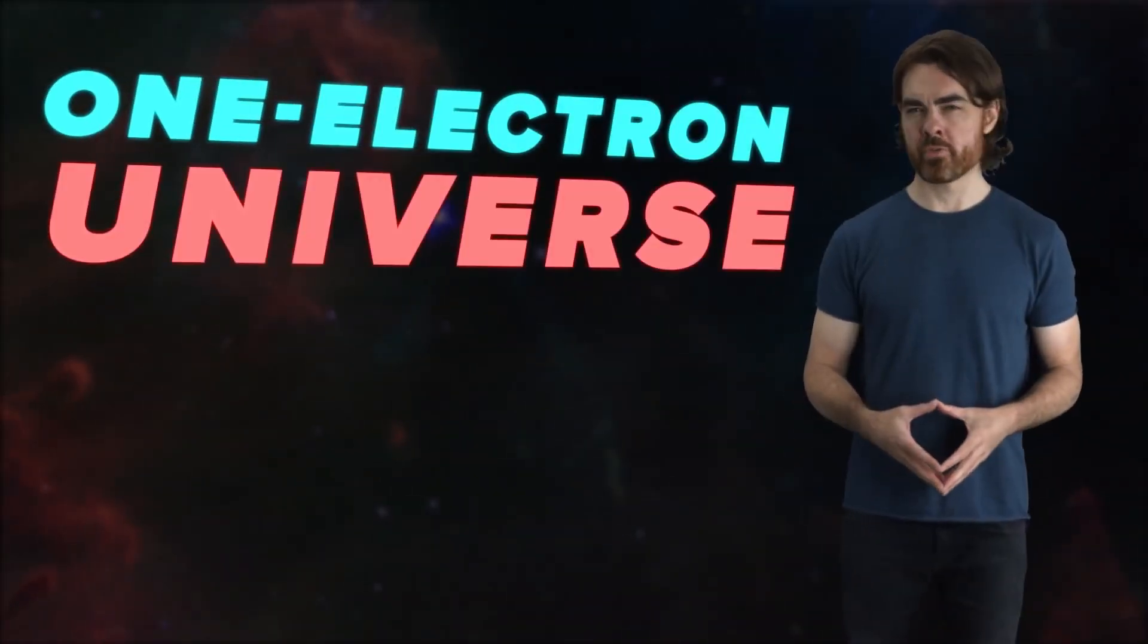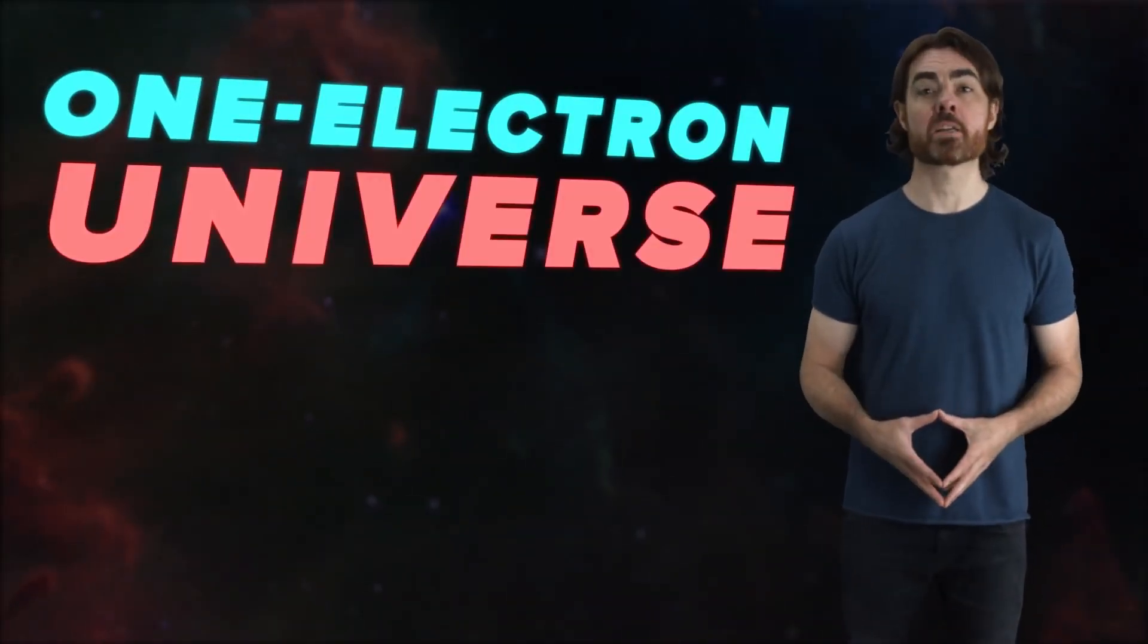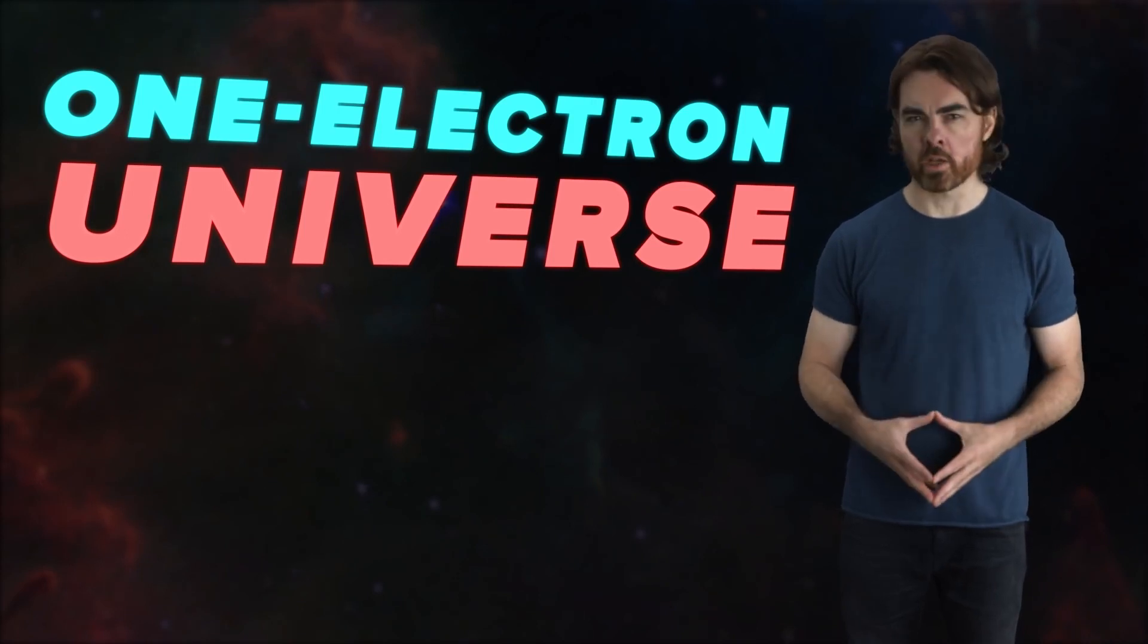The one electron universe was motivated by an odd fact about electrons that had troubled Wheeler, that they are all identical. Exactly the same charge, exactly the same mass, exactly the same everything. There was no satisfying explanation for this. Wheeler's notion was that if electrons behave as though they are identical, perhaps they truly are, to the point of being identically the same entity.